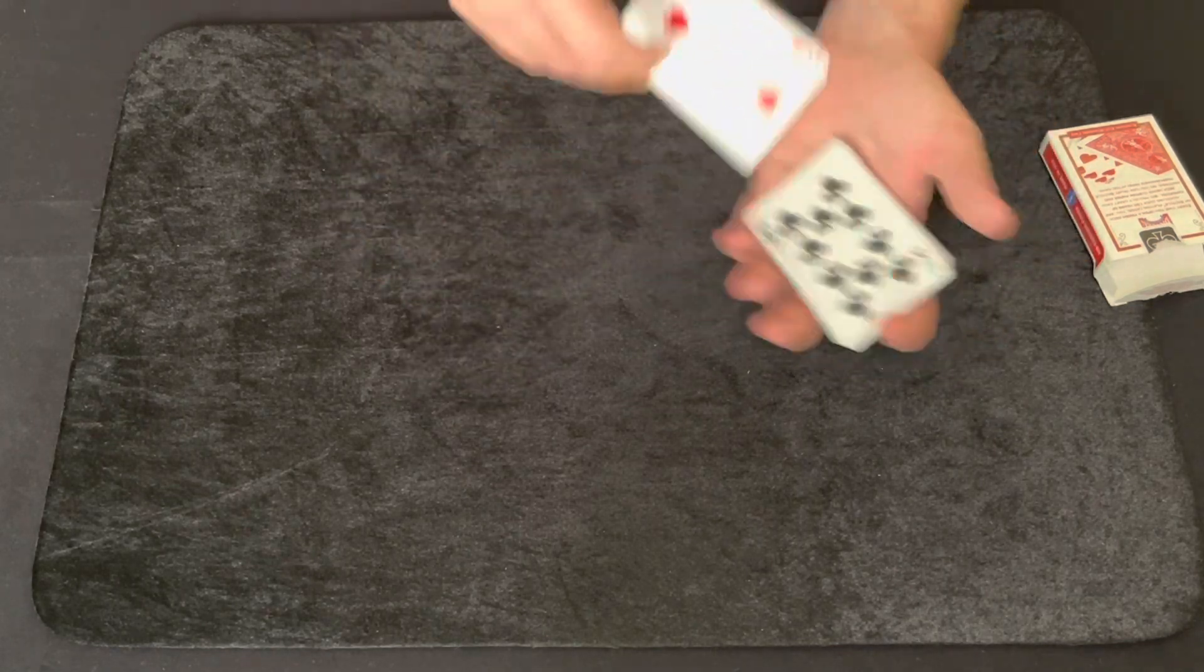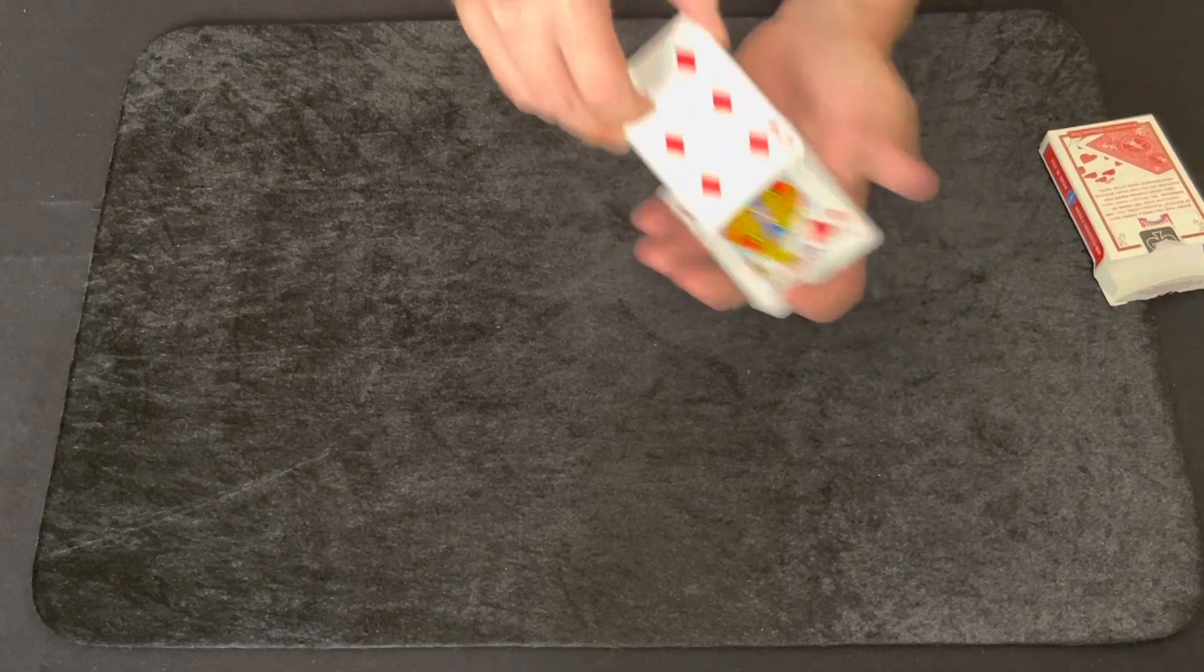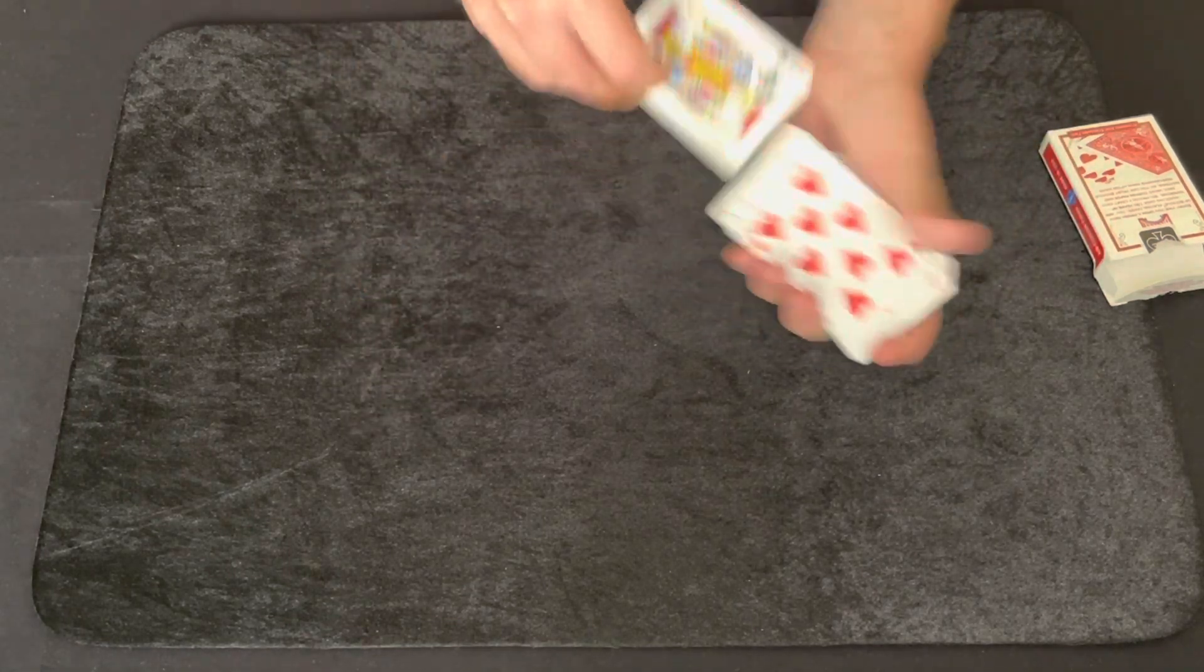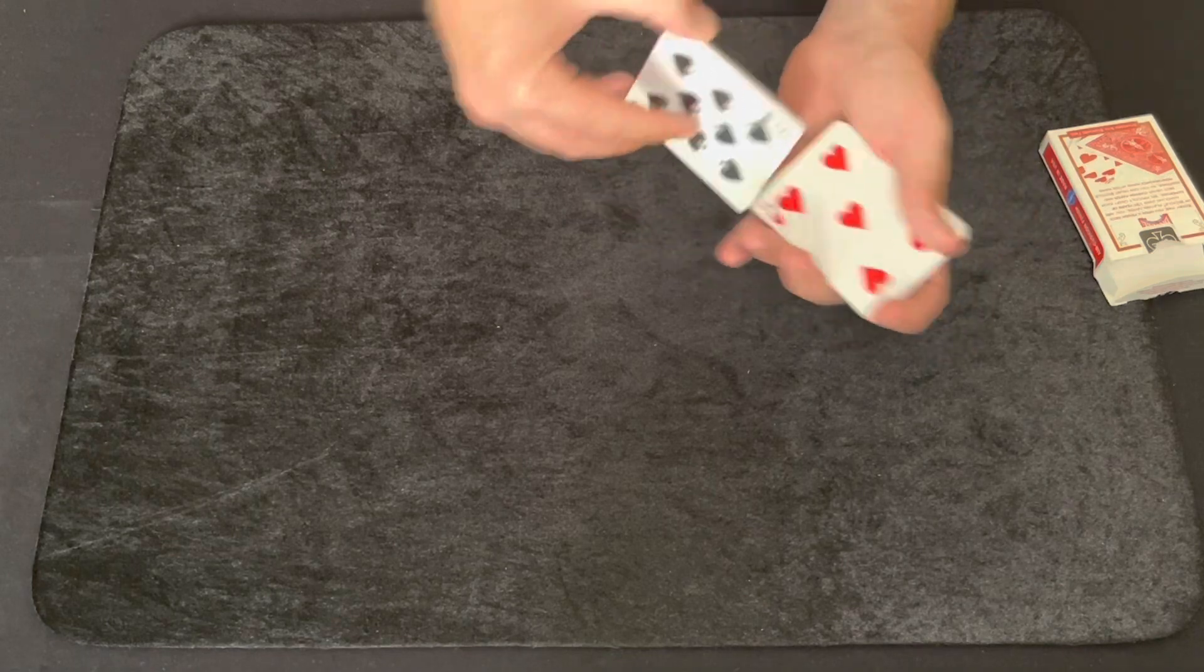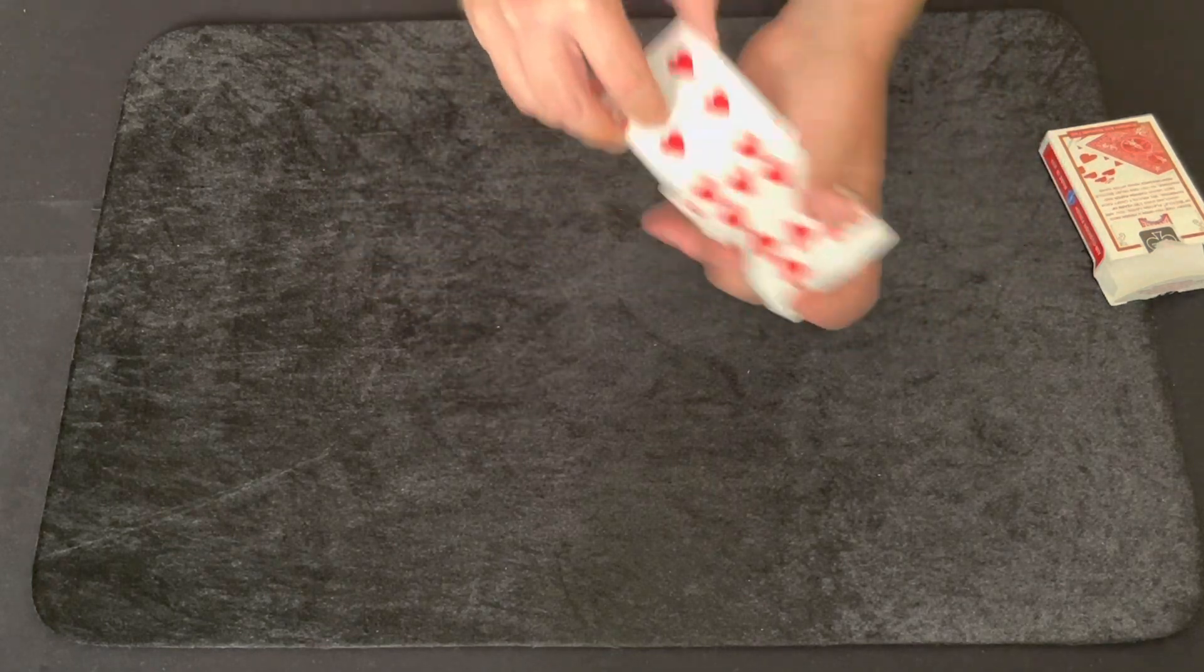Now as I go through the cards like this, I'm going to want the spectator to tell me when to stop at any time. And that's going to be the card, wherever they stop me at, that we'll use for this trick.